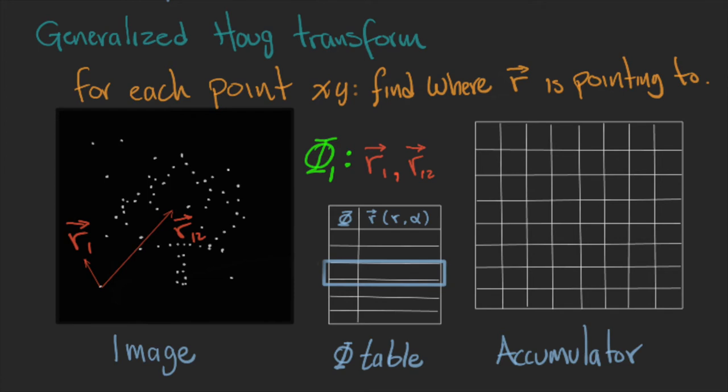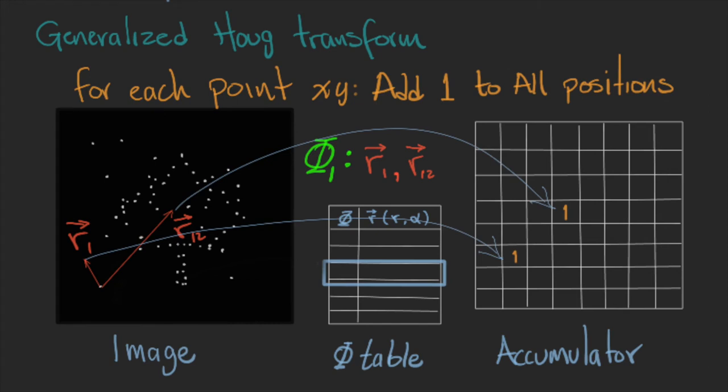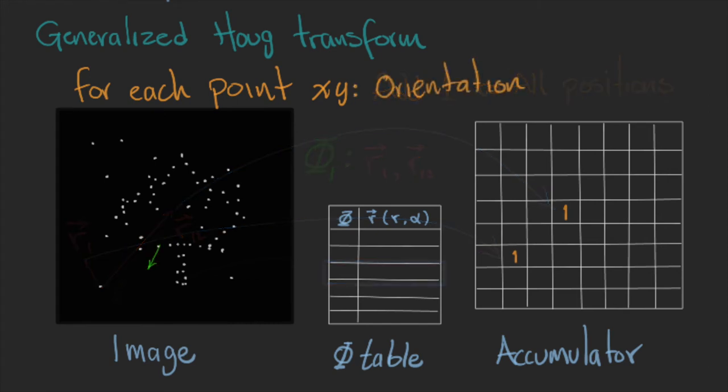So we find the coordinates that each vector is pointing to, and we add one in that position of our accumulator matrix. And then we repeat until we visit each point in the image.